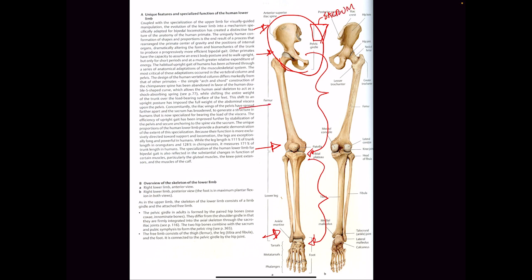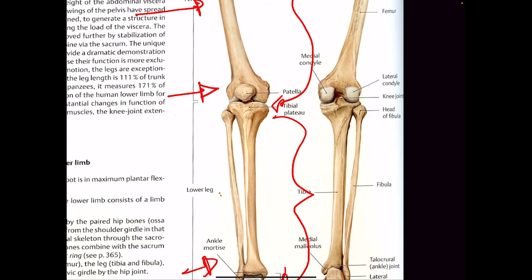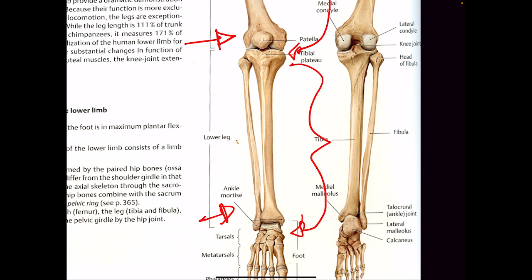Down from there, we have the femur. The femur is the largest bone in the human body. The third section down is the tibia and the fibula. The tibia is spelled T-I-B-I-A, fibula is F-I-B-U-L-A. You should at least know those terms.